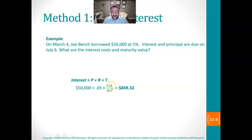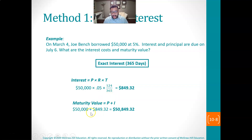Now just work it like before: 124 divided by 365 times 0.05 times 50,000. The interest for those 124 days is going to be $849. So when they pay this back after 124 days, they'll pay back the $849 plus the $50,000 they originally borrowed.